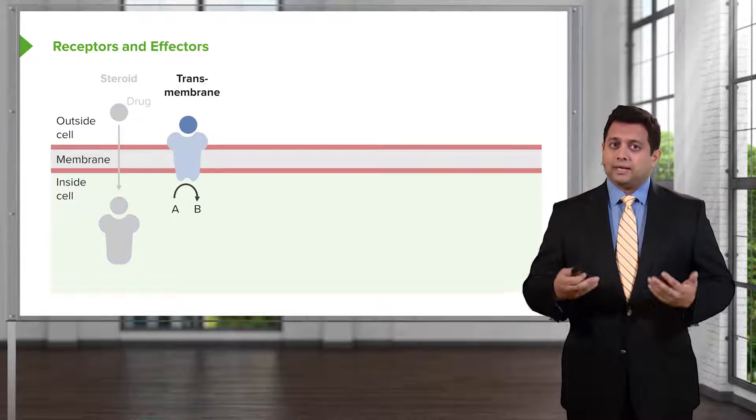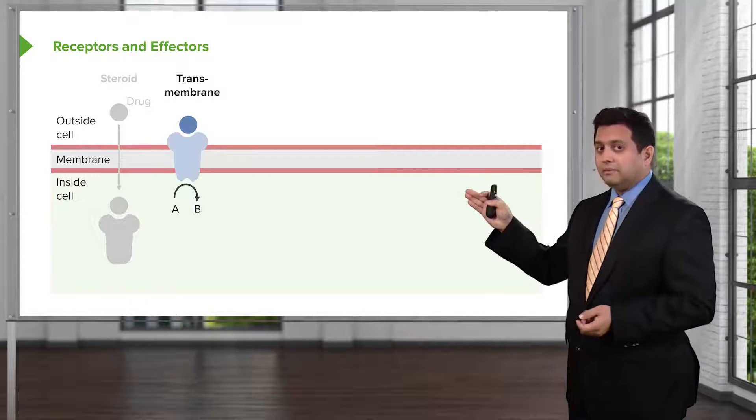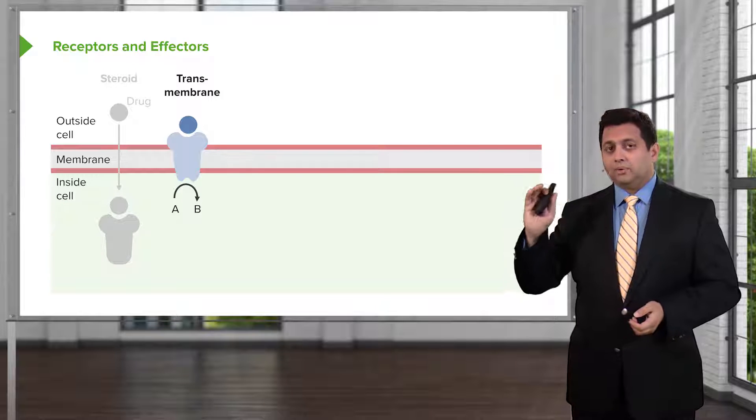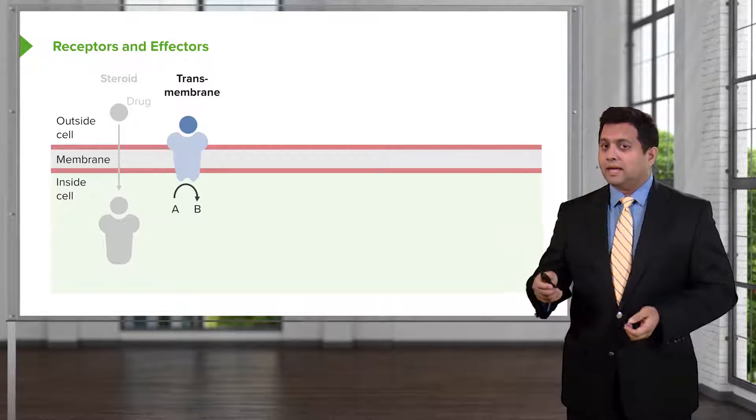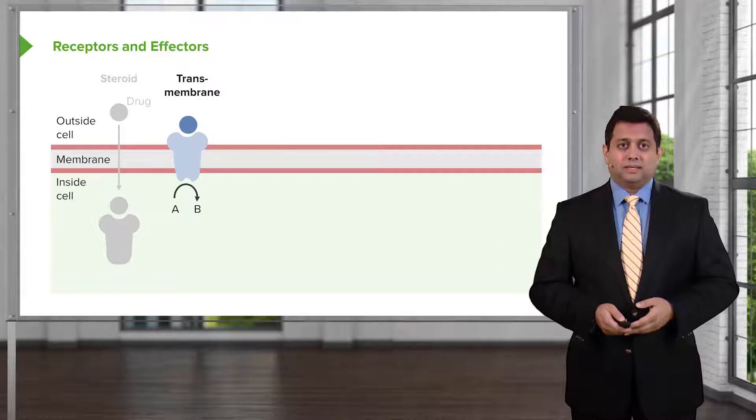A transmembrane receptor is one which spans the entire membrane, and the surface has a port or a receptor site that binds a drug, and the activity is underneath and causes an effect within the cell.